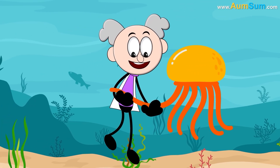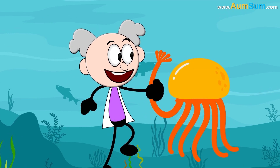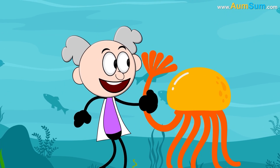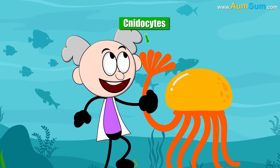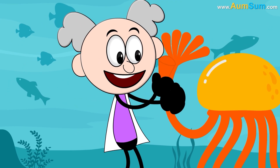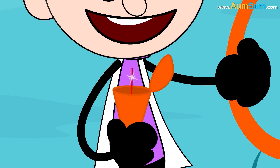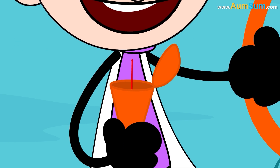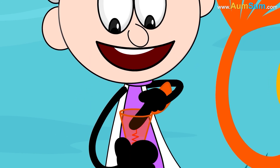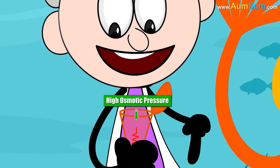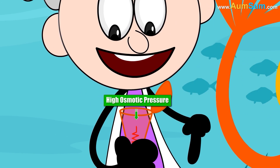What is the science behind a jellyfish's sting? Jellyfish tentacles contain thousands of venom-containing stinging cells called cnidocytes. Cnidocytes are basically small compartments which house mini-needle-like stingers. The stinger lies coiled under high osmotic pressure.